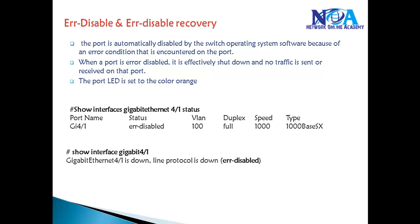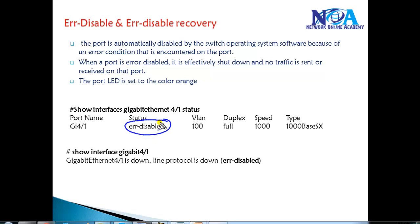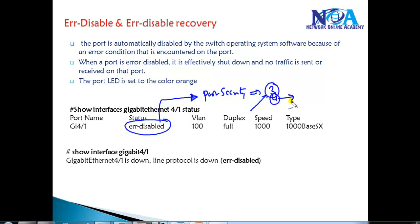In some previous topics, we discussed Error Disable State. This state normally comes if you violate any rules. For example, if I enable port security and limit the maximum MAC addresses to three, and a fourth MAC address is learned, I'm going to violate the rule, which means that particular port goes into Error Disable State.